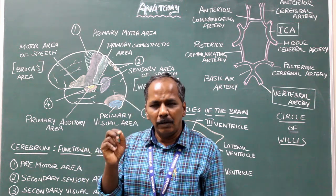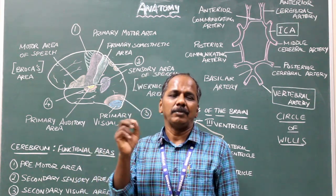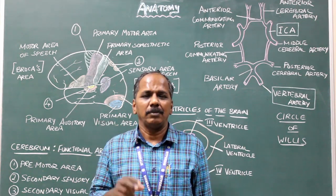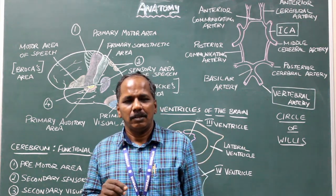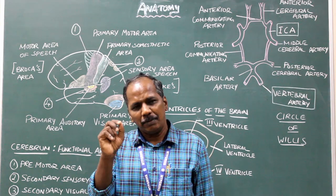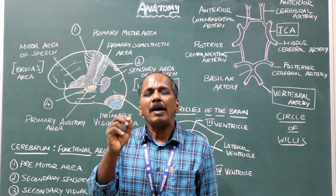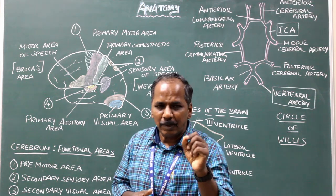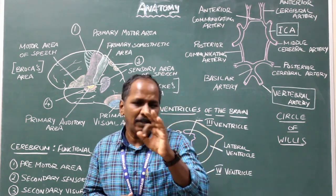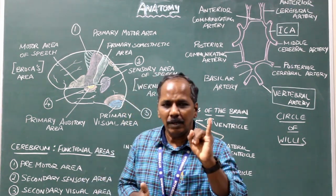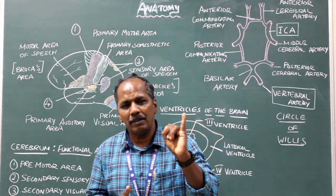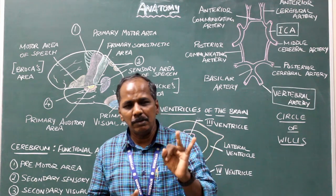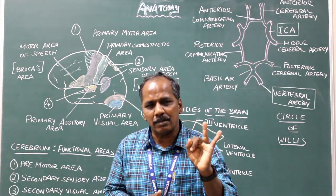The white matter of the cerebrum contains myelinated fibers. The fibers of the cerebrum are classified into three types: number one, association fibers; number two, commissural fibers; number three, projection fibers.